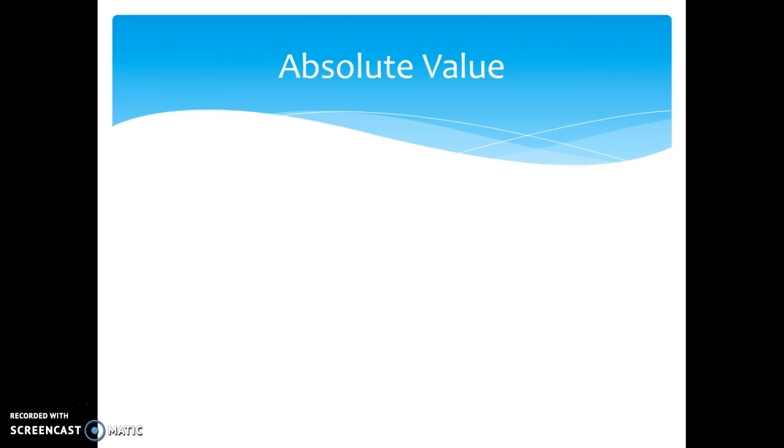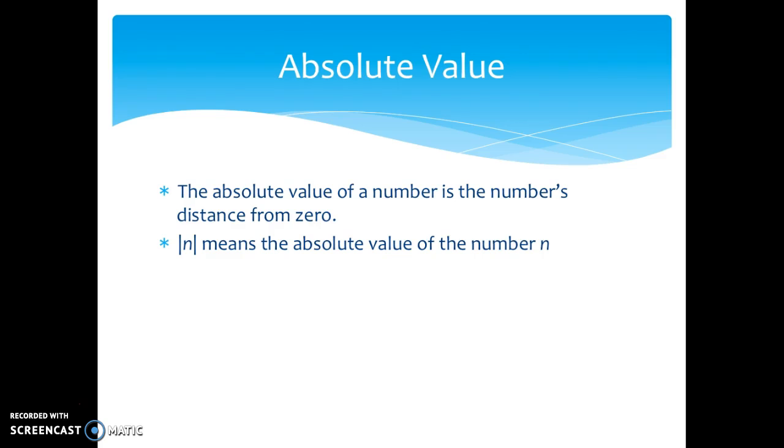Absolute value is our second term and this is probably a new term to you this year. Absolute value is known as the number's distance away from zero. We denote absolute value by these vertical bars. So if I have these vertical bars around n, you read that as the absolute value of n.